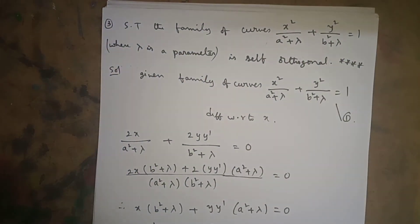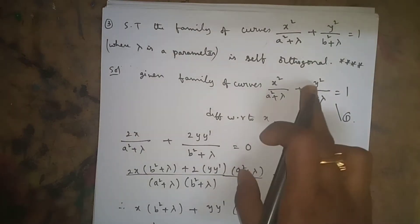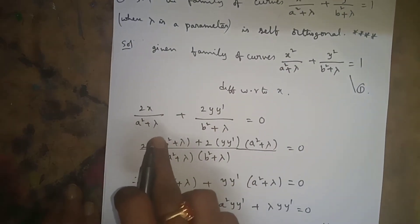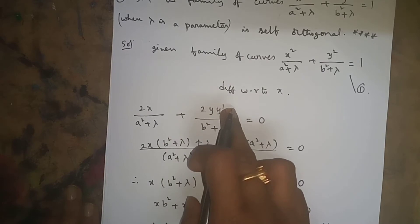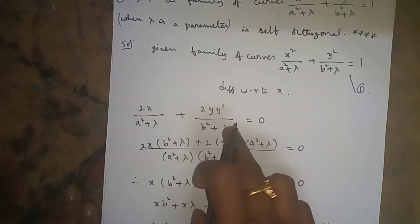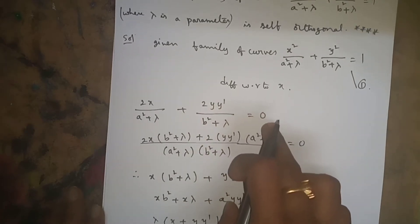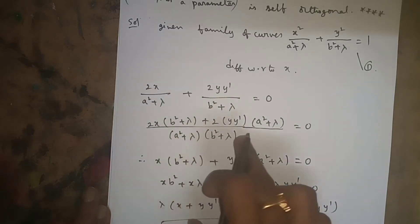To do this problem, first we take the given equation: x²/(a²+λ) + y²/(b²+λ) = 1. This is equation 1. Differentiating with respect to x, we get 2x/(a²+λ) + 2y·y'/(b²+λ) = 0, since b²+λ is a constant. The derivative of 1 is 0.